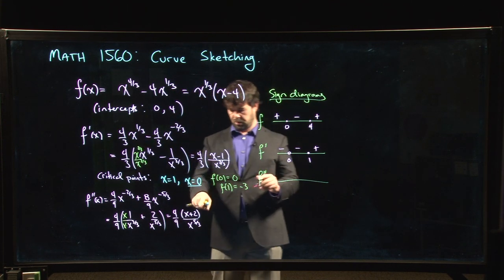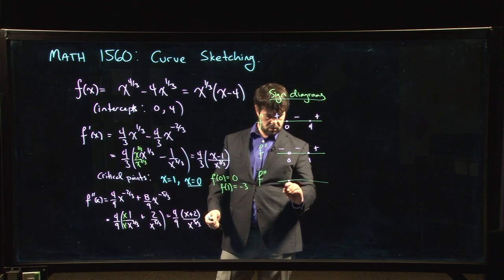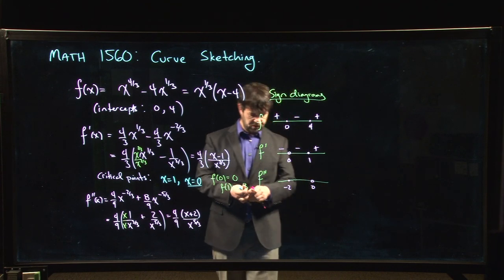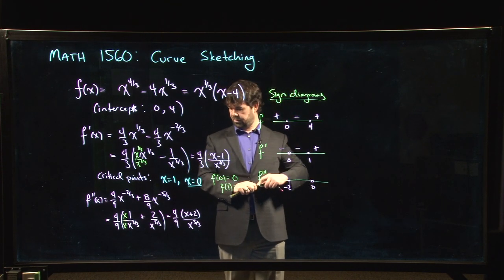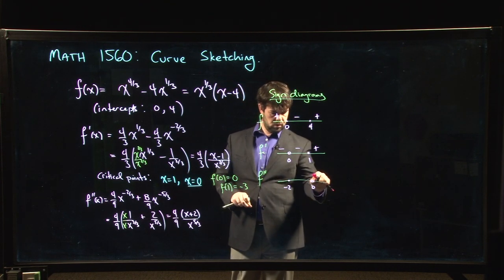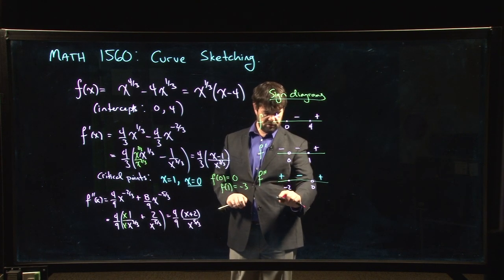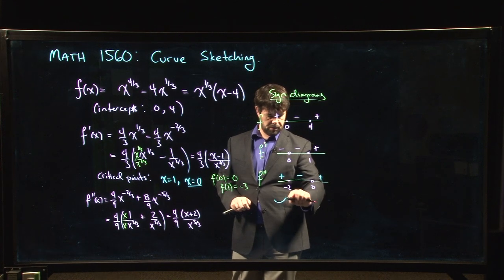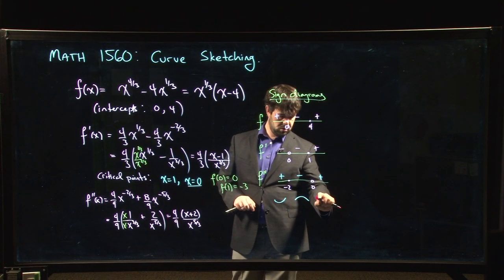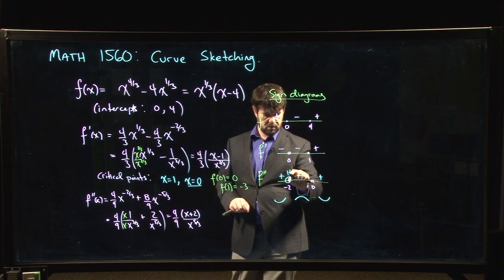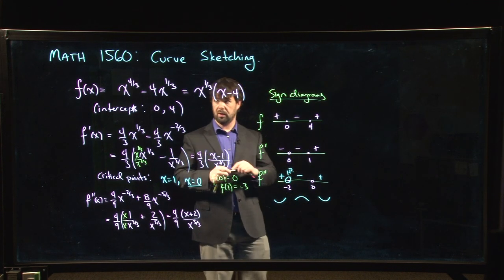For F double prime, we've got minus 2, and it's undefined at 0. And here we can find that our signs are going to go plus, minus, plus. Okay, so it's concave up, concave down, concave up, and so this is an inflection point.